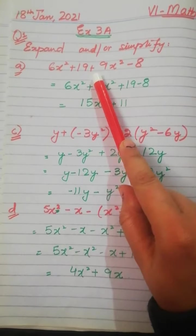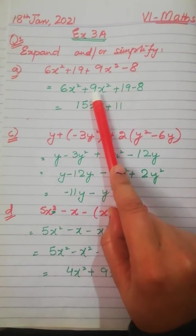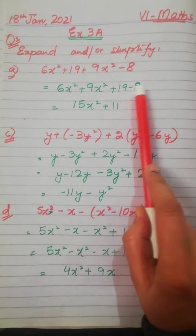Question is 6x² plus 19 plus 9x² minus 8. Okay, 6x² plus 9x² plus 19 minus 8.